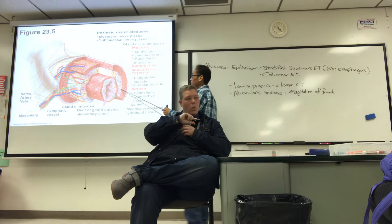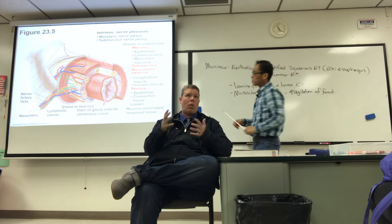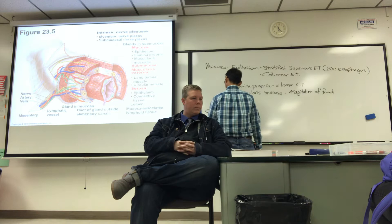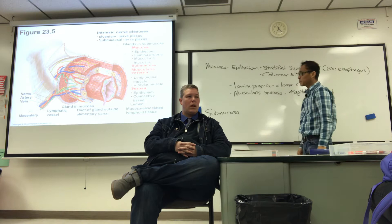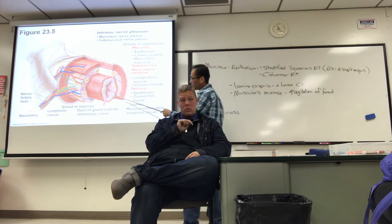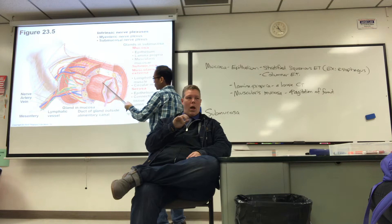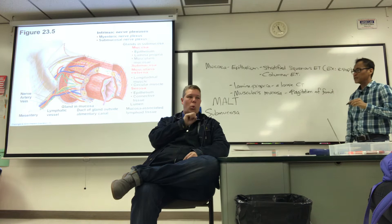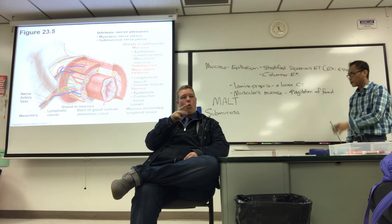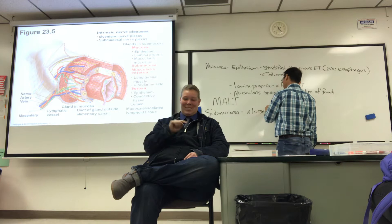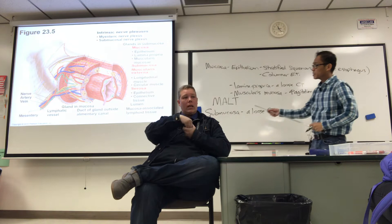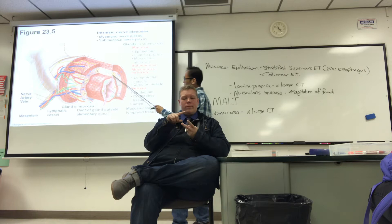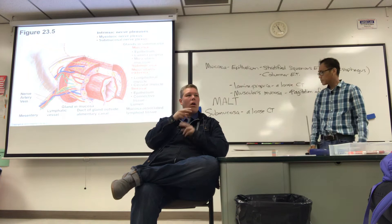The mucosa is surrounded by a connective tissue layer called the submucosa. Between the mucosa and submucosa is something called MALT — mucosa-associated lymphoid tissue — which invades both layers. The submucosa is a loose connective tissue that contains structures like glands. The ones you need to identify on models or histology slides are called Brunner's glands, found only in the duodenum — the first 10 centimeters of small intestine, right after the stomach.